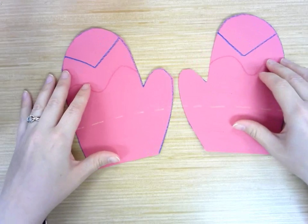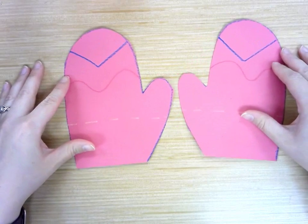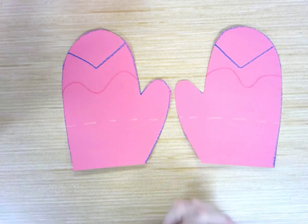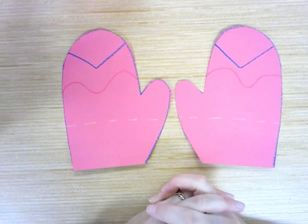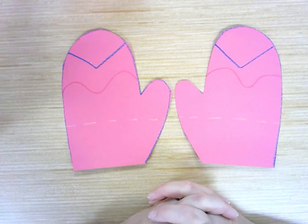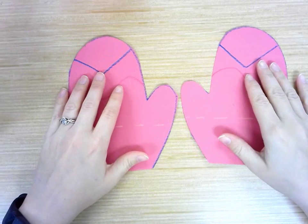We talked about how we want our mittens to be special because we live in Michigan, and we want to show what they would look like for the map of Michigan.